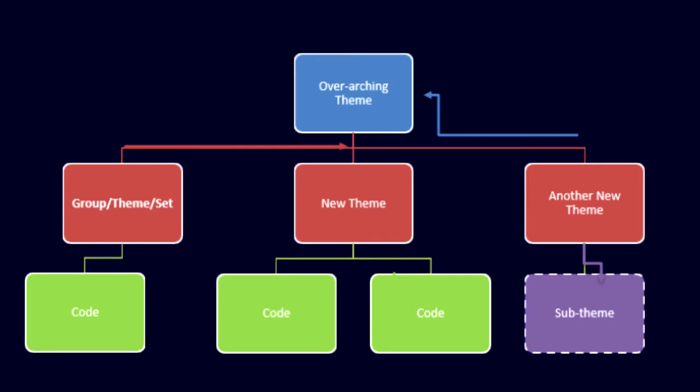So here's the same diagram again — we've just changed the labels. You'll notice that through a repeated process of chunking up and down in our thinking, one of the codes has been changed and refined and we now have created a sub-theme. But let me give you an example of how to do this.